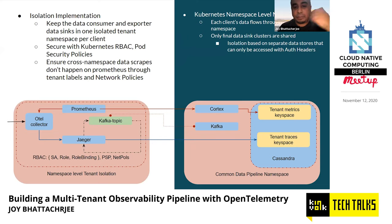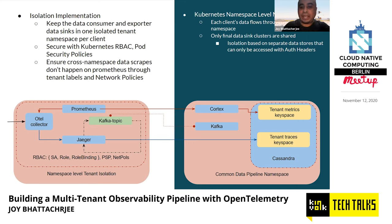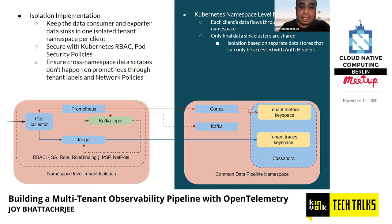Finally, data comes into the OTel collector, goes through Prometheus and Jaeger, and finally to Cortex. Cortex dumps data into the metrics keyspace and Jaeger dumps data into the traces keyspace in Cassandra. We then had a central data sink across all tenants with two keyspaces per tenant. We could build a query layer on top — our proprietary query layer — but our main core pipeline of getting high-variety, high-volume, high-velocity data was complete: consuming variety in all three dimensions and having a very stable pipeline using these components, dumping to a single data sink queryable through standard SDKs.